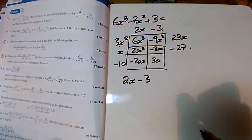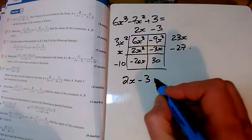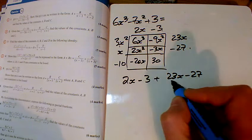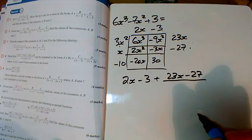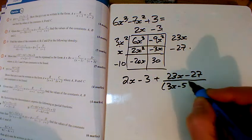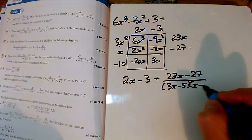I've got 2x - 3. Now I need to split up 23x - 27 into its two parts: 3x - 5 and x + 2.